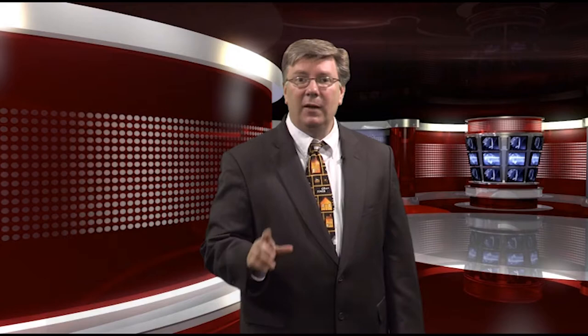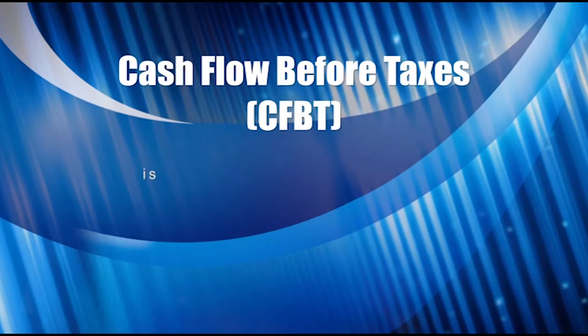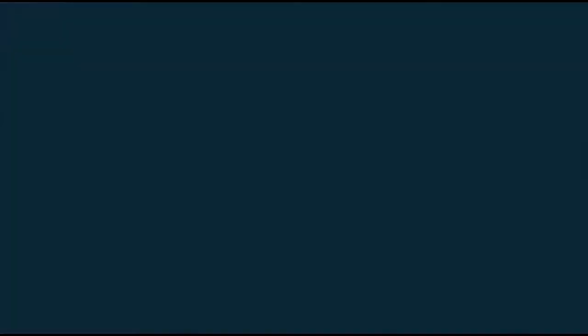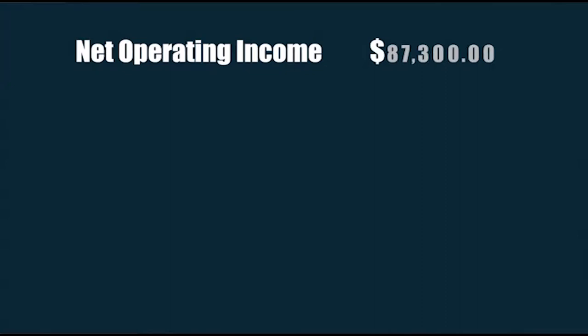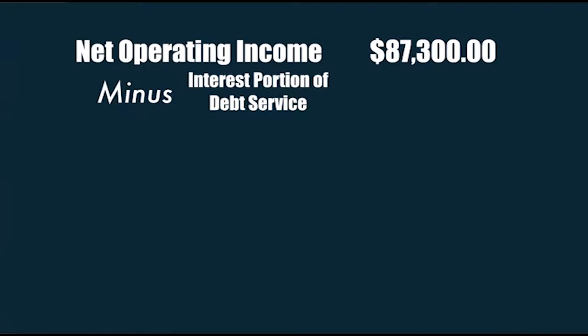That was cash flow before income taxes — CFBT, or cash flow before taxes. You may have a tax liability or receive a tax benefit each year from owning real estate. To determine tax ramifications, we go back to the NOI before taking off debt service, because the principal portion of the mortgage payment is not tax deductible. Starting with an NOI of $87,300, we can deduct the interest portion of our debt service and we can also deduct depreciation.